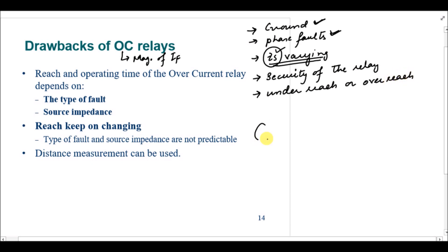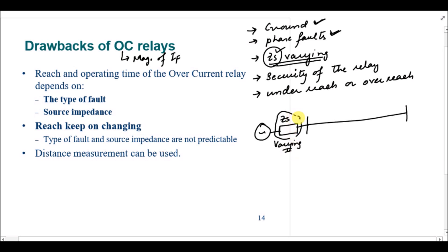Let's take an example. We have a source with source impedance ZS, and we are going to protect this feeder with an overcurrent relay. The ZS is varying because we get power from different sources — Generator 1 is closer to the feeder and Generator 2 is farther from the feeder. When Generator 1 is providing power to this feeder, the ZS value will be smaller.